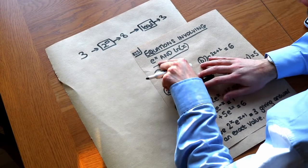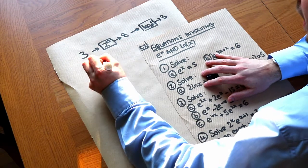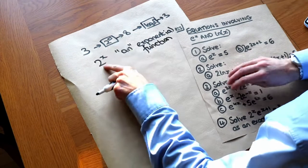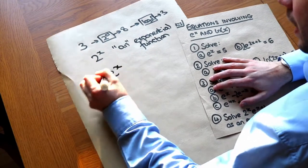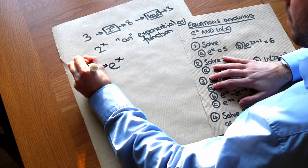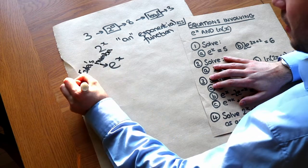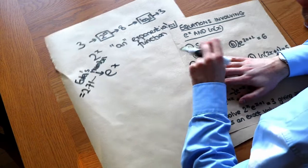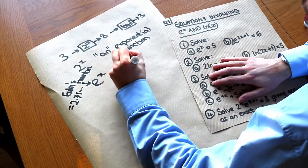Now there's a special exponential function which is e to the power of x. Just as 2 to the power of x is an example of an exponential function, there's a special number we can put in place of the 2 known as e, and that e is known as Euler's number. Its value is equal to 2.71 and it's irrational — the digits go on forever. This is known as the exponential function.